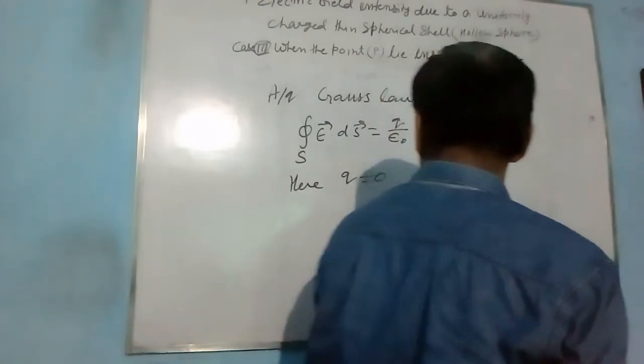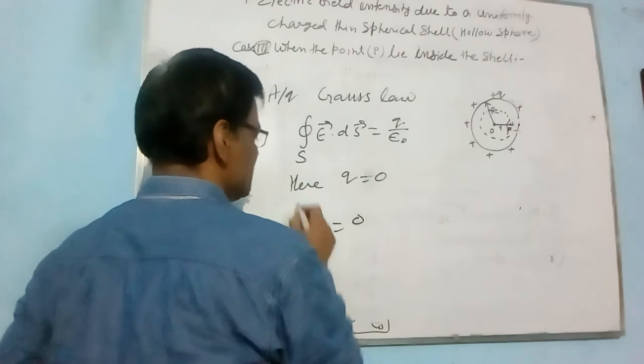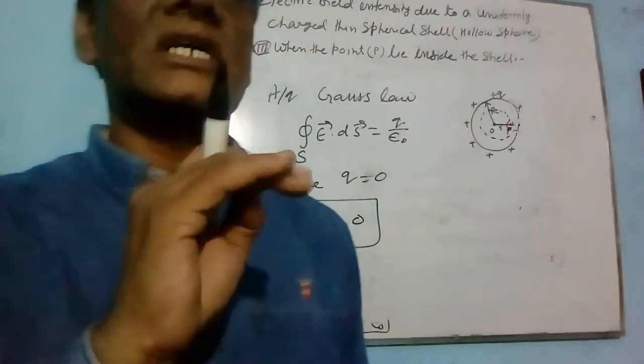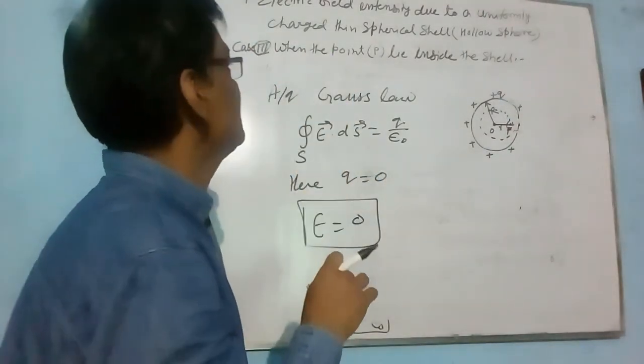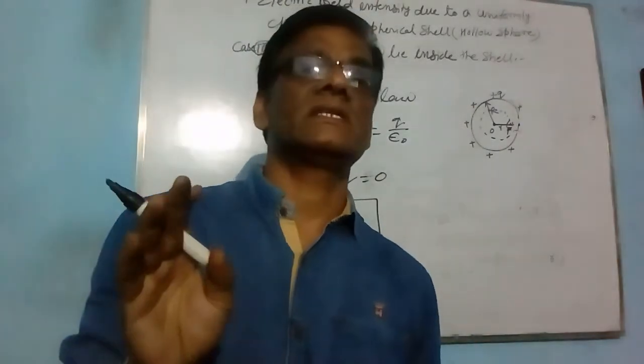So the electric field E becomes 0. This is the required three conditions to find the electric field intensity due to a uniformly thin charged spherical shell.